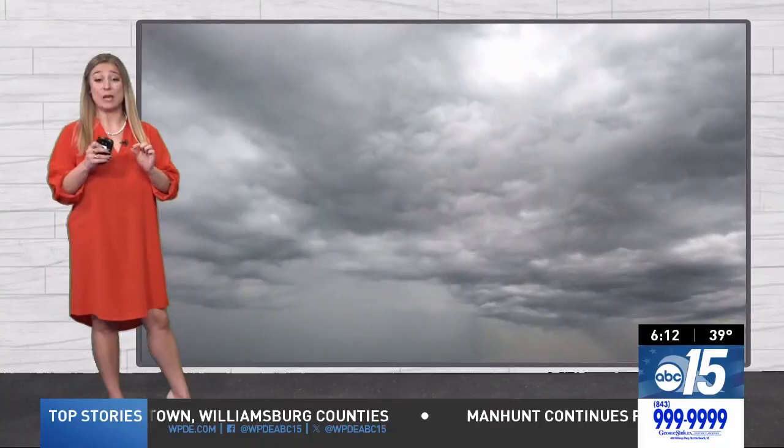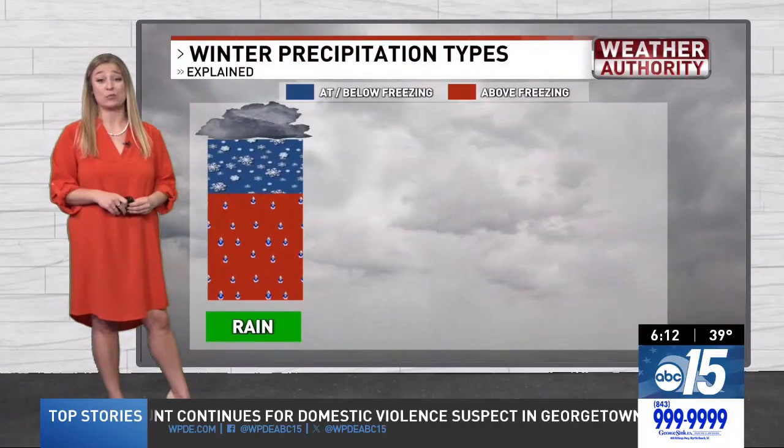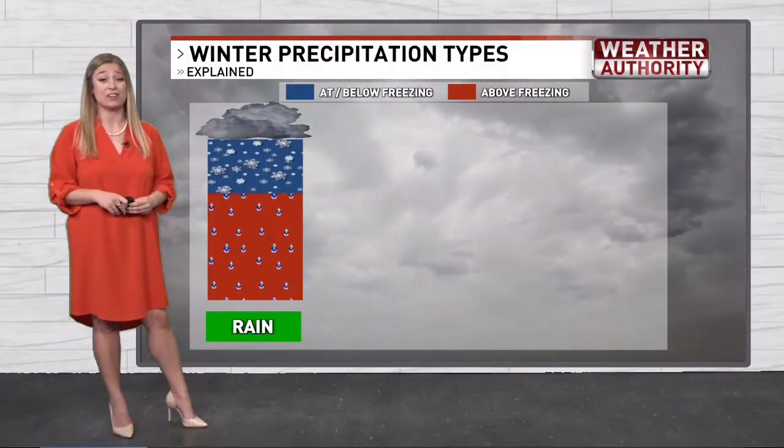With different precipitation types in winter, the key factor is just a degree or two in temperature change can determine what precipitation actually falls. And this changes as we go through the atmosphere.